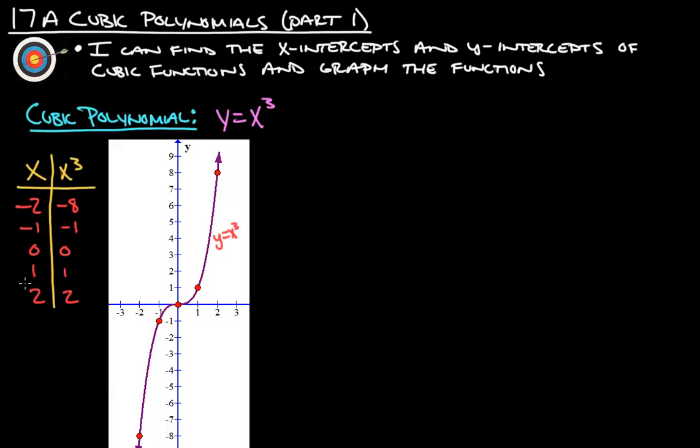So let's start off with what a cubic function is. Cubic polynomial, y equals x to the third, looks like so. And most people don't really know what that looks like, so we can always just make a t-chart. So, x and y. Instead of putting in y, I'm going to put in x cubed.